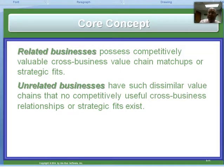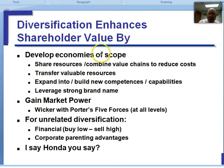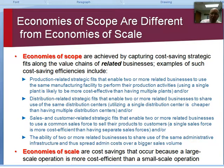Related businesses share commonalities in their value chain such that sharing is possible. In unrelated diversification, you really don't have any interest or ability to share items across various business units to generate synergy. Related diversification is built on synergy; unrelated diversification is not. For related diversification, we look at economies of scope — different from scale — where you can share things, and it isn't just sharing actual activities but also sharing competencies and know-how, so what you know how to do can help you in multiple places.